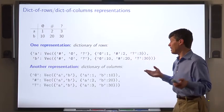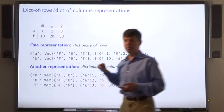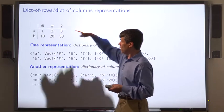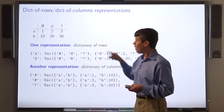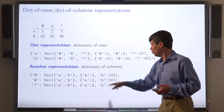A similar representation is as a dictionary of columns. Here the dictionary maps the column labels to the vectors. So at sign is mapped to 1, 10, sharp is mapped to 2, 20, and question mark is mapped to 3, 30.